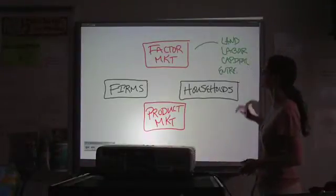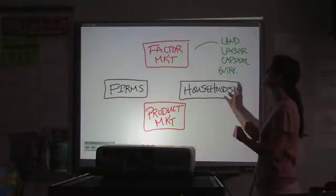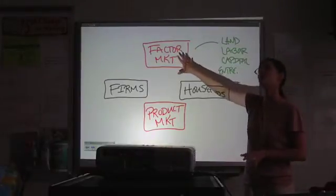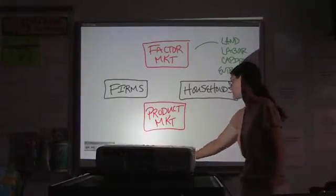Capital is interest because most machines are expensive. They have to be financed. Capital is interest. And for the entrepreneur, it is profit. So those are the four resources that we're talking about being bought and sold in the factor market. Factors of production are your resources.